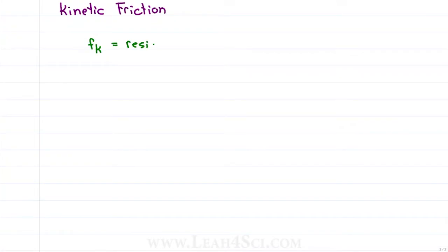What if the object is already moving? That's where kinetic friction comes in, written as lowercase f sub k, to resist a moving object and ultimately slow it down until it comes to a complete stop.